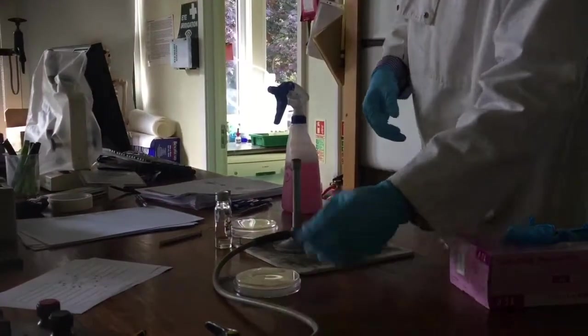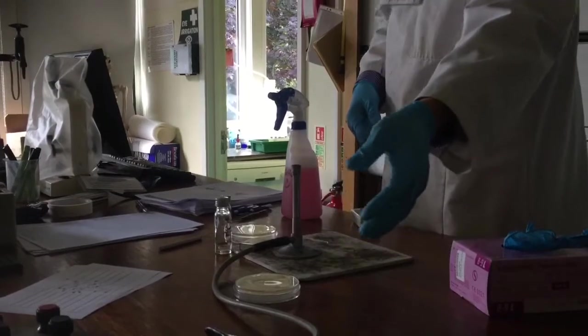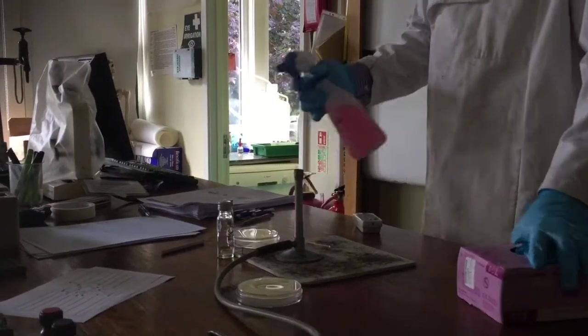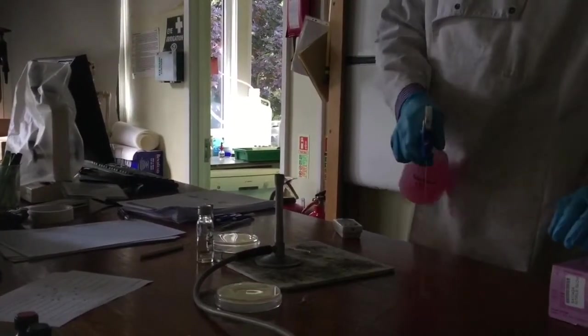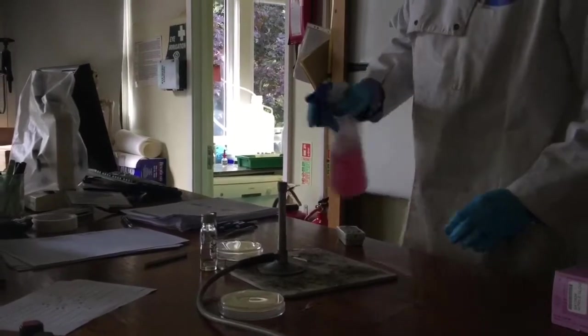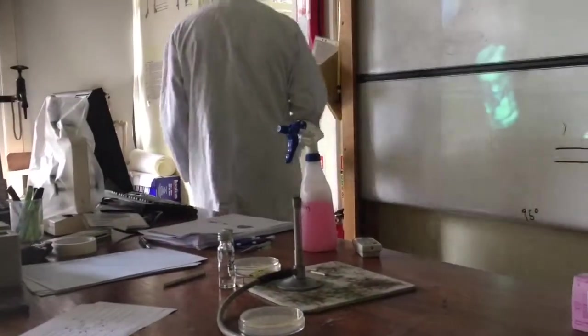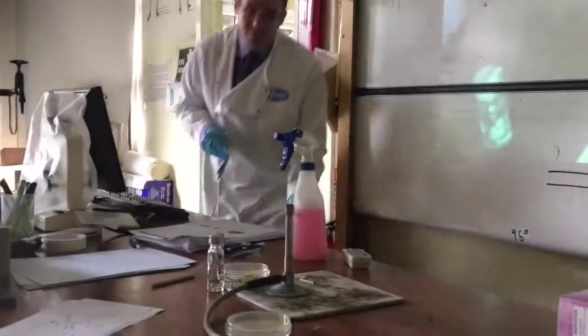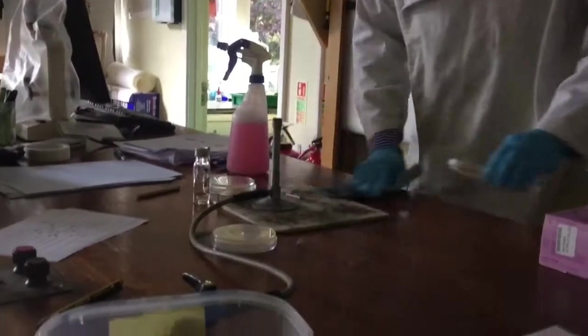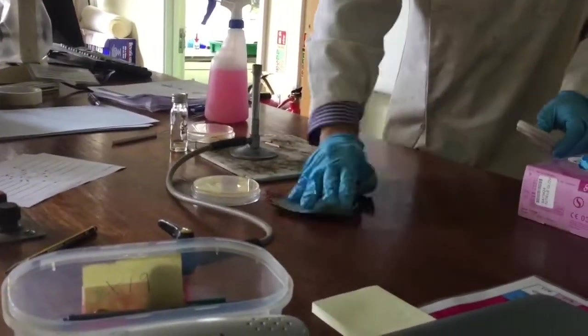So simple Bunsen burner safety. Make sure your Bunsen's attached well. Before we turn the Bunsen burner on, I'm going to just spray down the bench and wipe it off with a bit of kitchen roll, just to make sure that it's sterile. So we want to make sure the area around here is sterile.